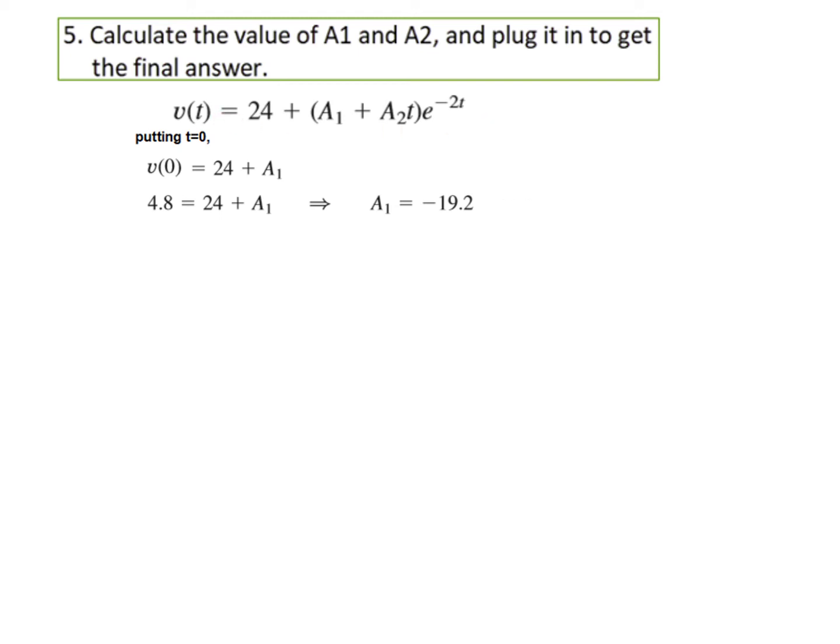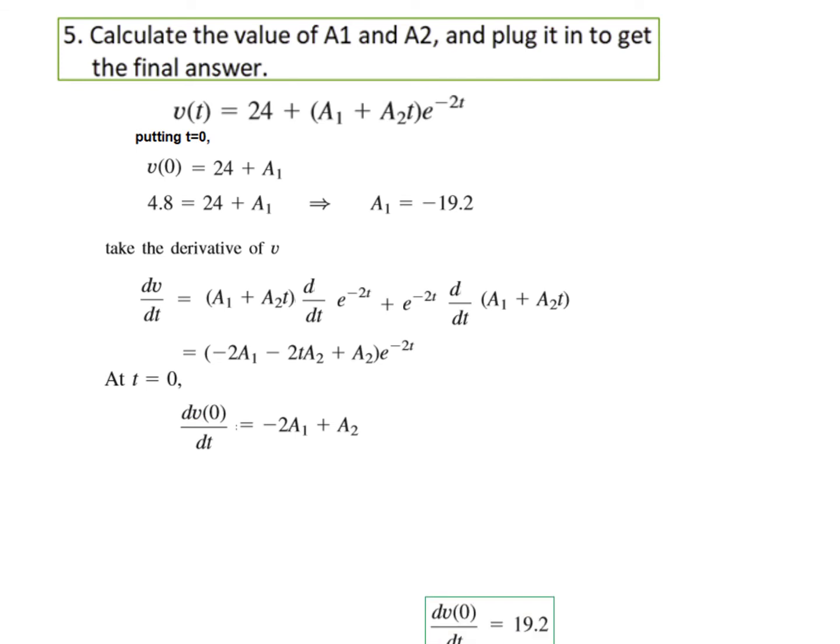Now to get the second equation we have to differentiate this. We are taking the derivative of V. This is one of the terms, and this is the second term, the derivative of product. I hope you know how to solve. Anyway I have written it here. This is dV/dt. Now we put T equals 0 in this. So at T equals 0, dV0/dt, we get minus 2A1 plus A2 from here. Putting T equals 0, this will be eliminated. We know the value of dV0/dt, so we will plug in that 19.2. So this is our second equation. Now we plug in the value of A1 in this. So we get A2 minus 19.2.